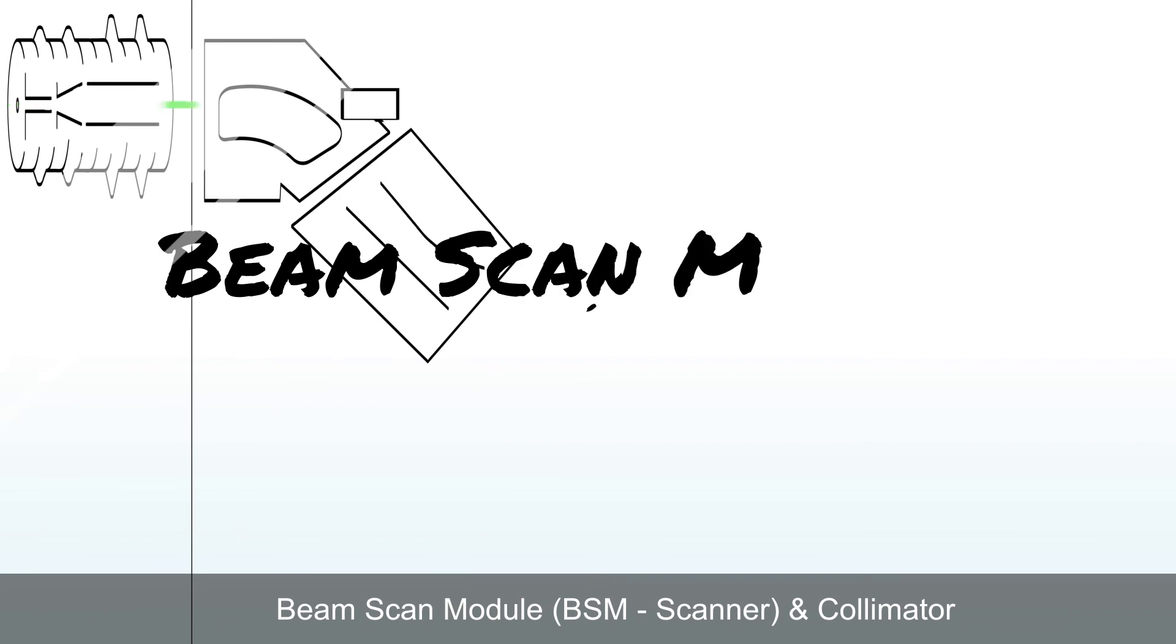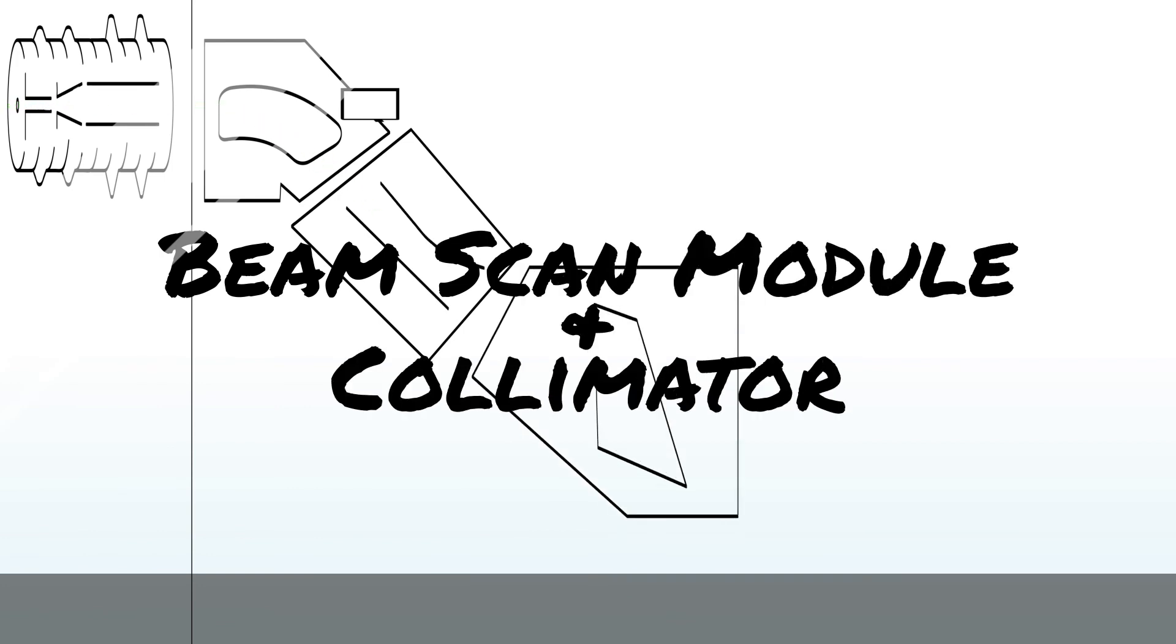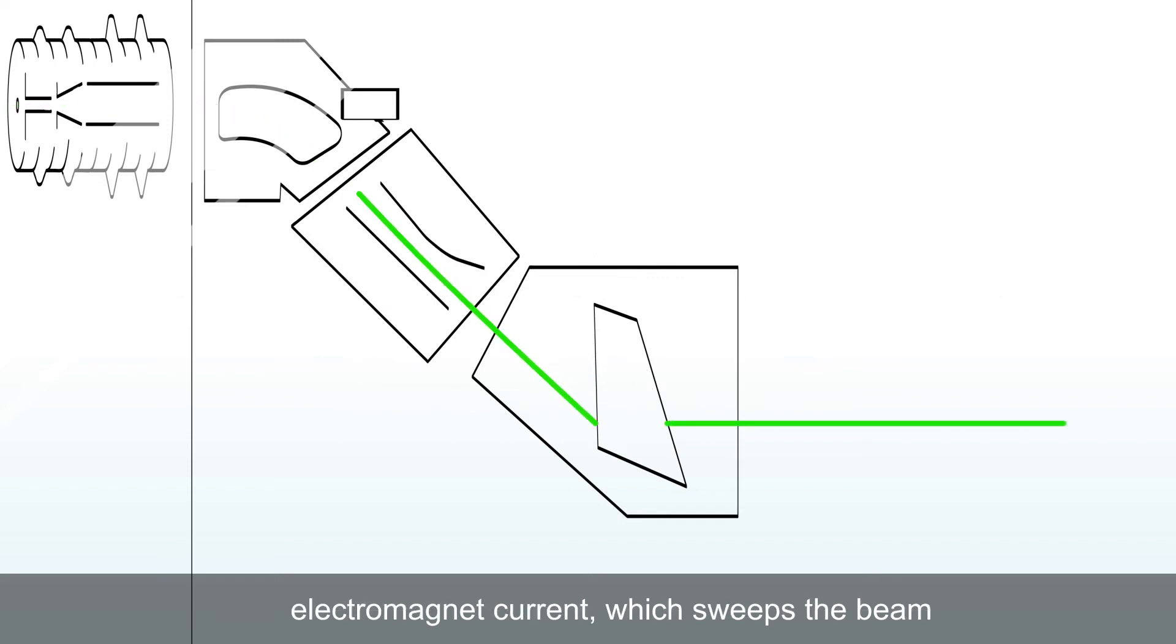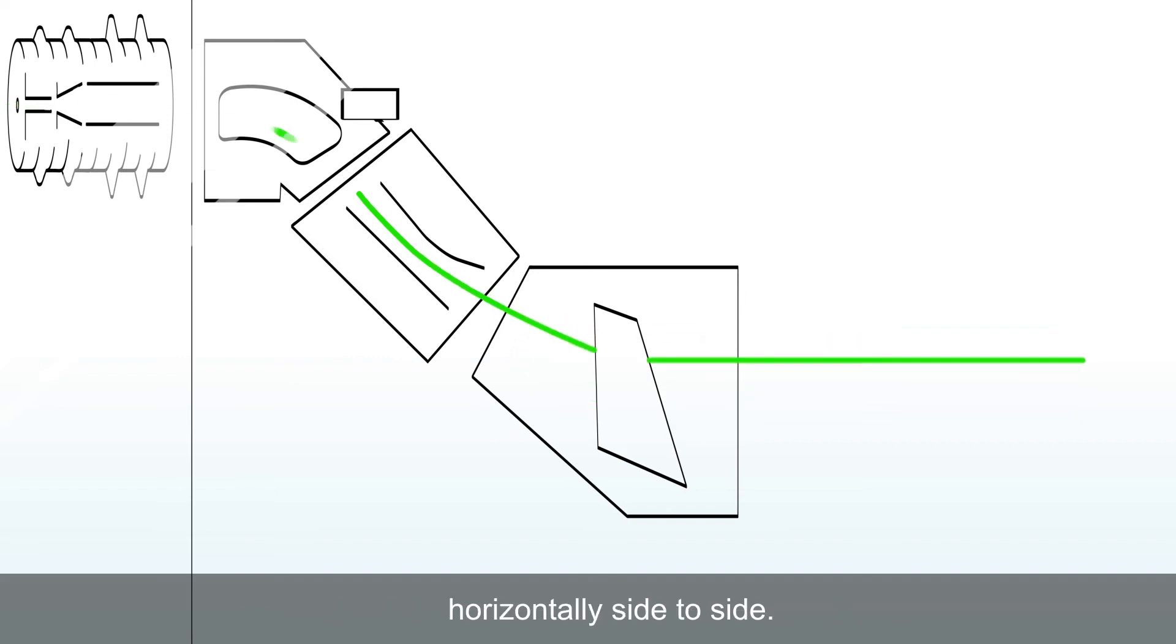Beam scan module, BSM scanner, and collimator. The beam scan module uses variable electromagnetic current which sweeps the beam horizontally side to side. The collimator precisely adjusts the varying scan angle of the beam, resulting in a precise zero degree implant.